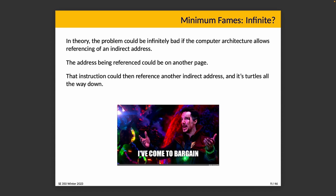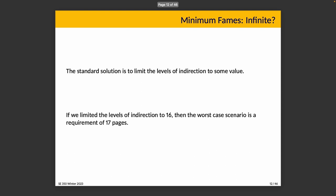With arbitrary indirect addressing, the entire virtual memory would theoretically have to be in main memory — generally not possible. The standard solution is to limit the levels of indirection to some fixed value. If the maximum chain is 16 levels of indirection, the worst case is a requirement of 17 pages, which is not unreasonable. As long as we pick a limit and stick to it, we can determine how many pages must be in frames to execute an arbitrary program. Much like recursion leading to a stack overflow, a program that exceeds this limit is terminated.